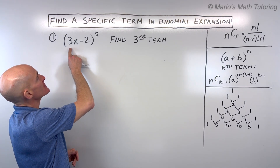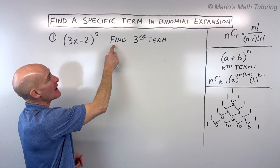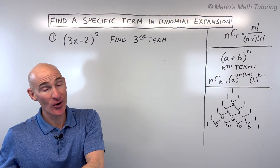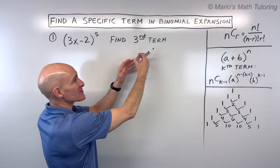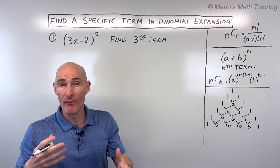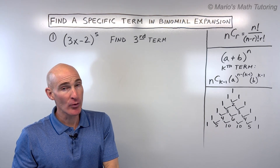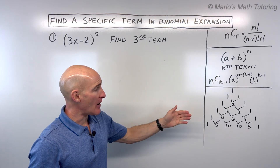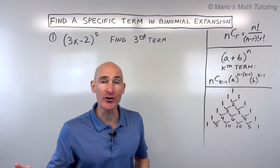The first example is the quantity 3x minus 2 to the fifth power, and we want to find the third term. The very slow way would be to multiply 3x minus 2 together five times. So another way is to use the binomial expansion theorem and Pascal's triangle to expand the whole binomial, and then find that third term.